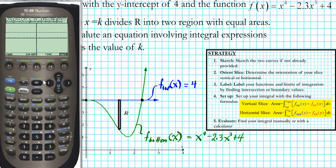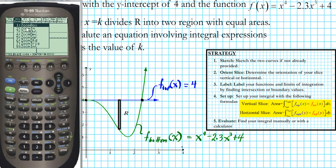So that's the top function, f(x) equals 4, and the bottom function is there. Now we're going to make use of the window zoom option to get a nicer view of the region. We'll use the zoom box option, which is under F2. The zoom box creates a window for you to zoom into a particular region. Press enter on zoom box.